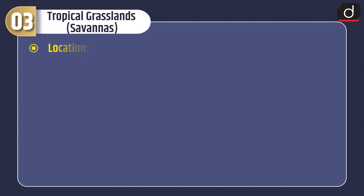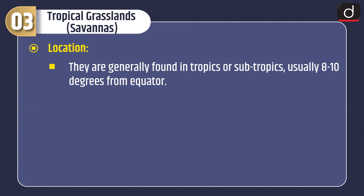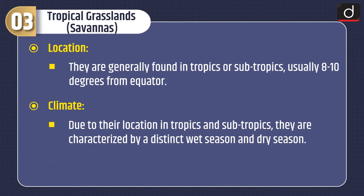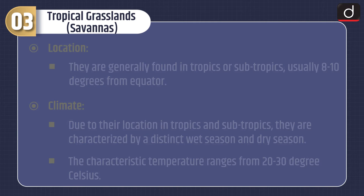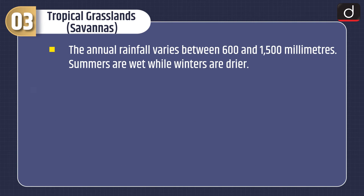Now let's discuss tropical grasslands, i.e. savannas. Location: they are generally found in tropics or subtropics, usually 8 to 10 degrees from the equator. Climate: due to their location in tropics and subtropics, they are characterized by a distinct wet season and dry season. The characteristic temperature ranges from 20 to 30 degrees Celsius, and annual rainfall varies between 600 and 1,500 millimeters. Summers are wet while winters are drier.